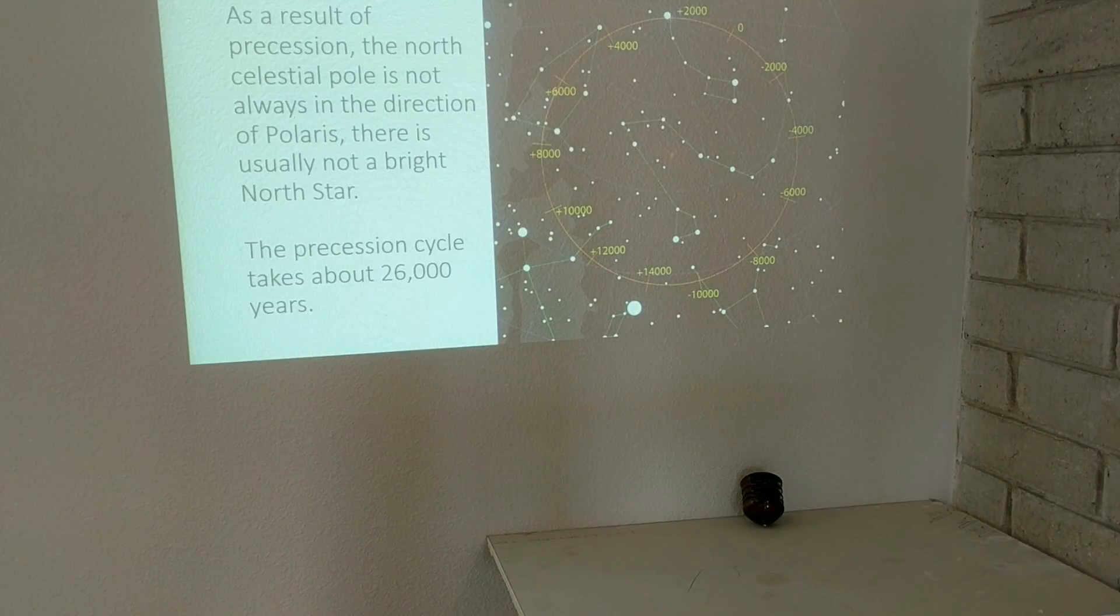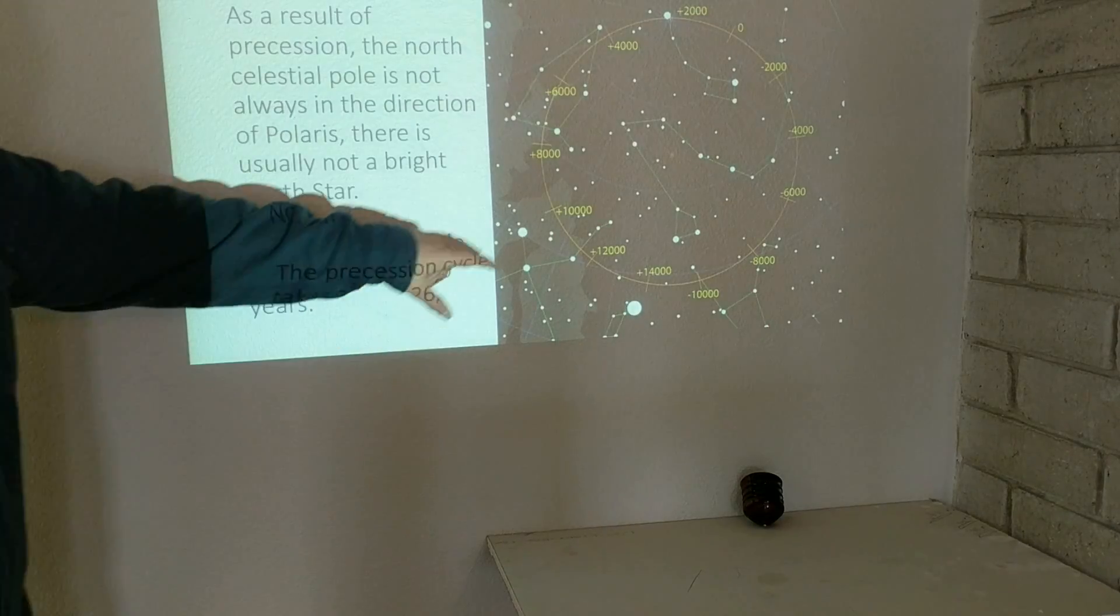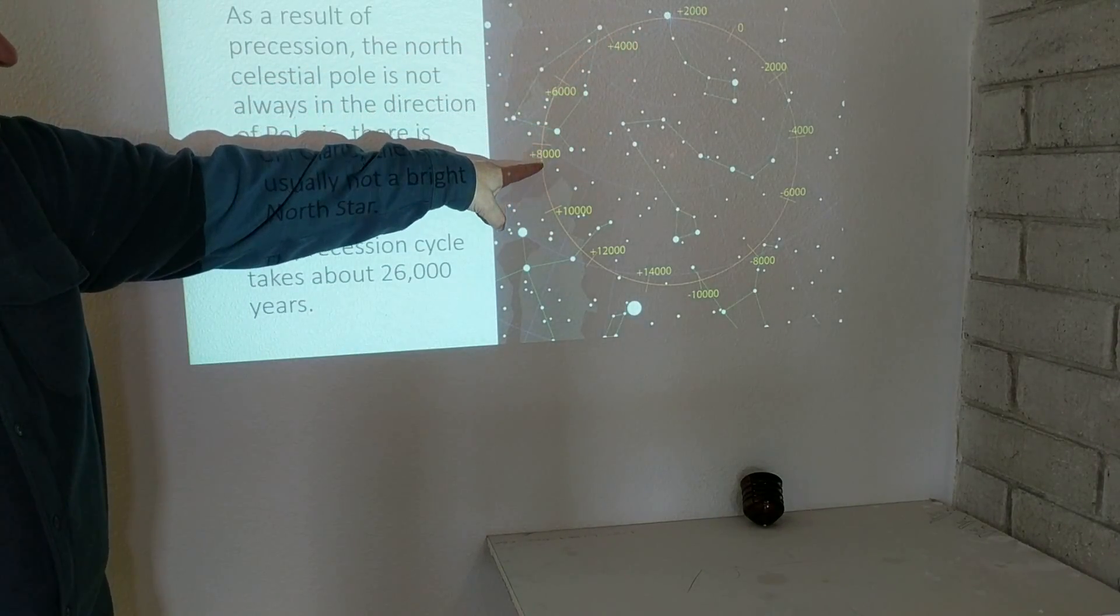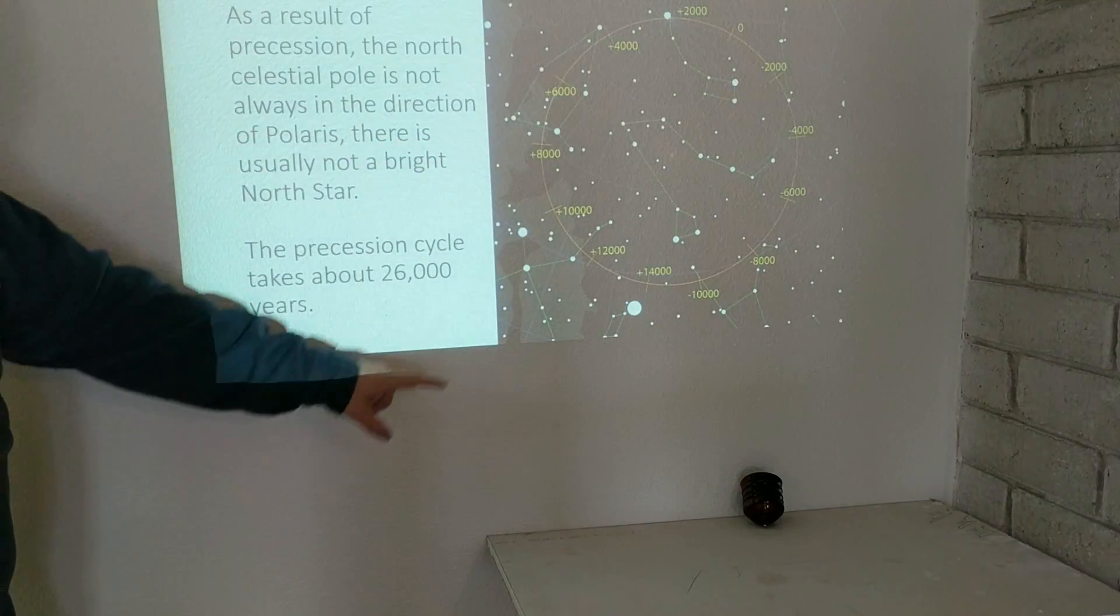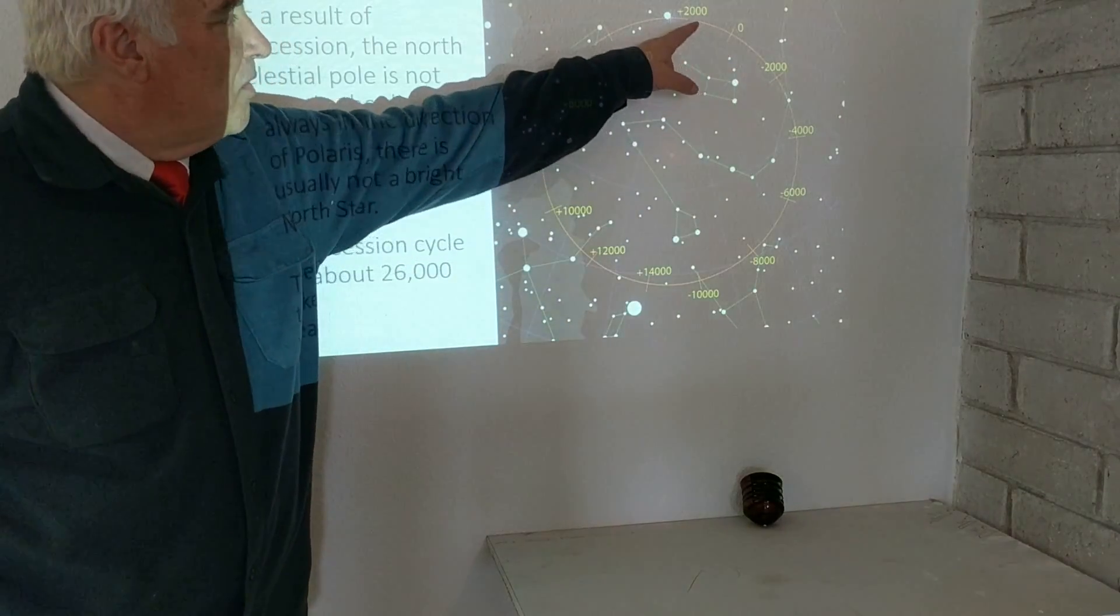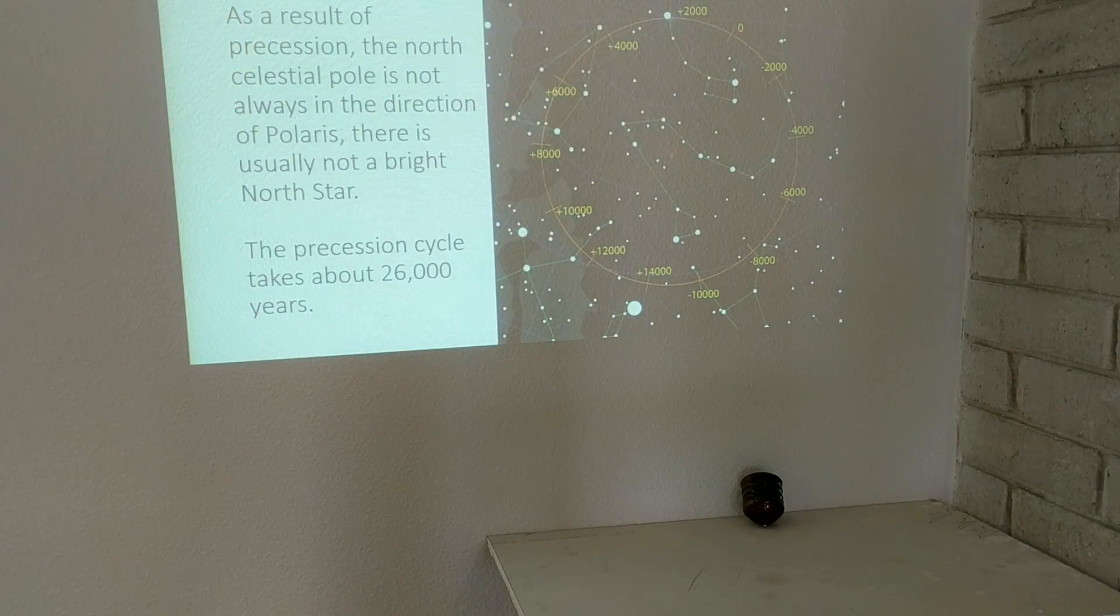The full precession cycle takes about 26,000 years. So currently we're here, and over time the north celestial pole, which again is where the axis of the Earth is pointed into the sky, moves over a cycle of 26,000 years. So Polaris will again be the north star approximately 26,000 years from now.